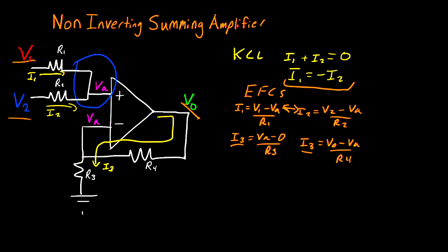Starting with I1 and I2, I'll have V1 minus VA divided by R1 is equal to VA minus V2 divided by R2. Now equating my I3s together, I have VA divided by R3 is equal to VO minus VA divided by R4.